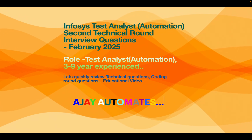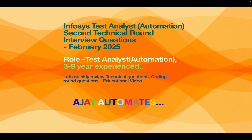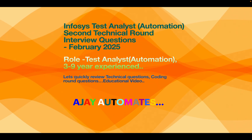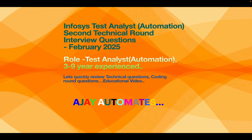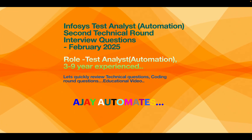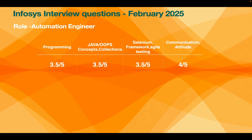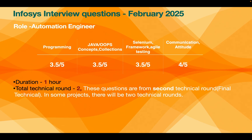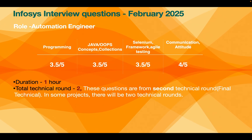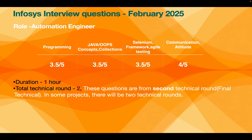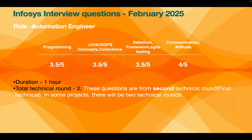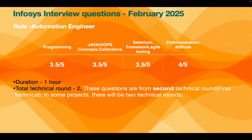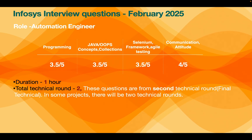Hi friends, welcome to Ajay Automates channel. In this video let's see the second technical round interview questions asked in Infosys for a test analyst automation role. You can call it a client round because there were some client team members also in the meeting. The interview was mainly focused on Java programming, OOP concepts, Java collections concepts, and various questions from manual testing and Selenium techniques. The duration of the interview was one hour.